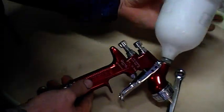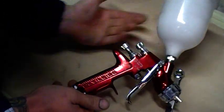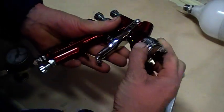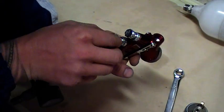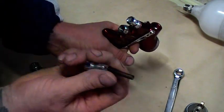So first up we'll take the pot off, and we'll take the air cap off. Next up we'll pull this fluid needle out. Make sure you put your spring aside, don't lose it.